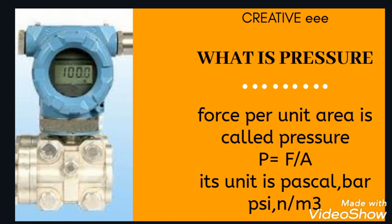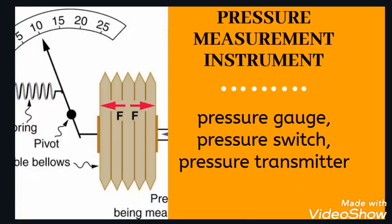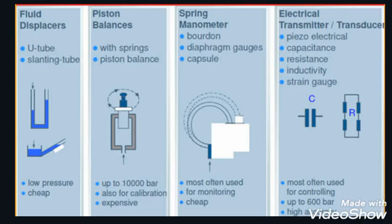What is pressure? Force per unit area is called pressure, so P is equal to F over A. Its unit is Pascal, bar, psi, or Newton per square meter. Pressure gauges, pressure switches, and pressure transmitters are used to measure the pressure. Here you can see a balloon type pressure gauge.